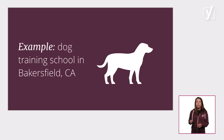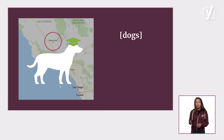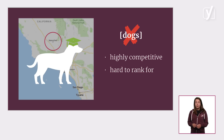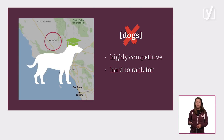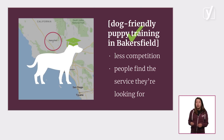Let's consider an example. Imagine you have a dog training school in Bakersfield, California. You might think: I'd like to rank for the focus keyword 'dogs', but ranking for this will be very hard or even impossible, as it's a highly competitive term. Lots of websites will be trying to rank for it. In this case, it's more realistic to try to rank for, for instance, 'dog-friendly puppy training in Bakersfield'. This is a focus keyphrase consisting of multiple words. It will give you a much higher chance of ranking, because fewer websites will be trying to rank for this phrase. Also, people searching for this phrase are more likely to be searching for the service you offer.